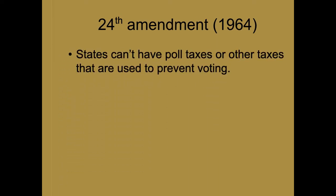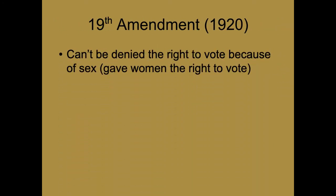The rest of the voting amendments are pretty simple. The 19th Amendment — a very important amendment — said that states can't deny someone the right to vote because of their gender or sex. There weren't any grandmother clauses or anything like that. So when the 19th Amendment was passed in 1920, women were given the right to vote. It doubled our voting population.